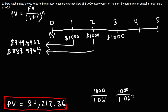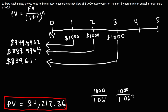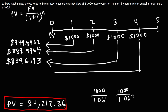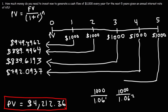What about $1,000 three years from now? That's $1,000 divided by 1.06 raised to the third power, which equals $839.62. Continuing: $1,000 divided by 1.06 raised to the fourth power gives $792.09. And $1,000 five years from now, at 6% interest, is $1,000 divided by 1.06 raised to the fifth power, giving $747.26.